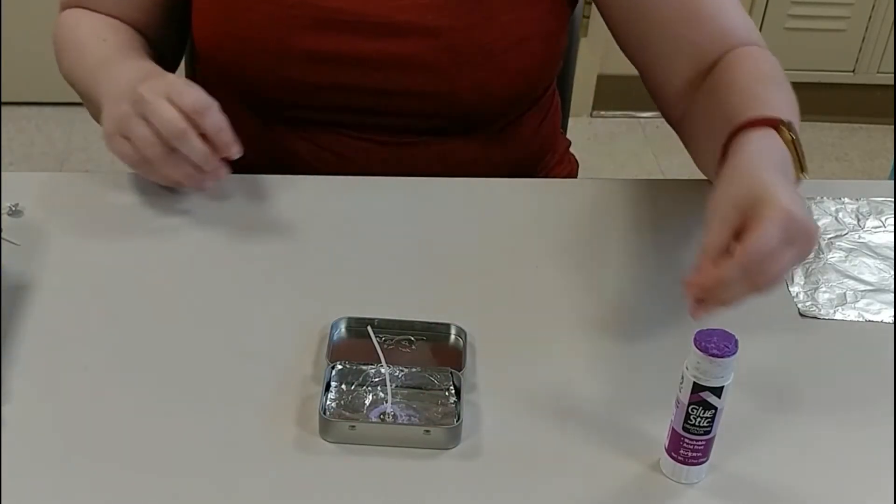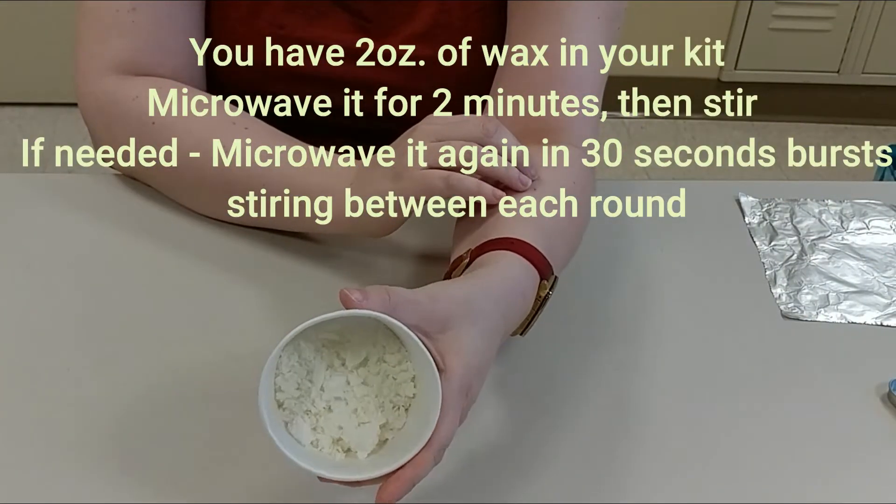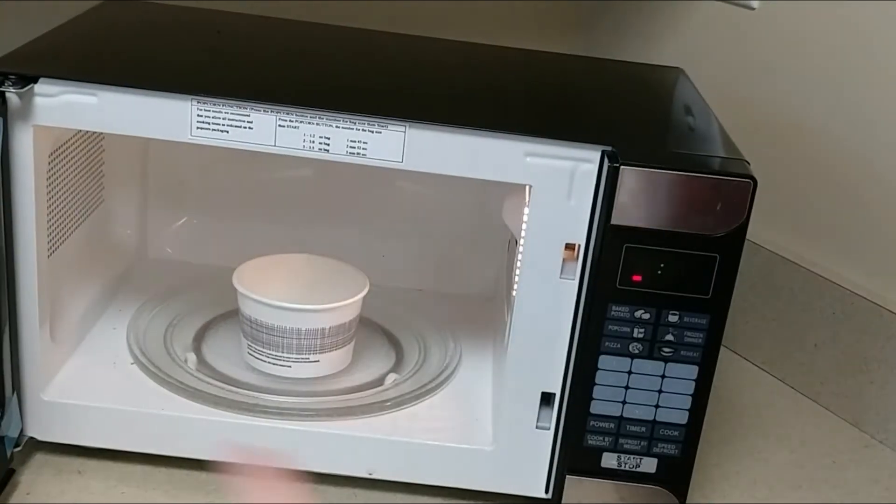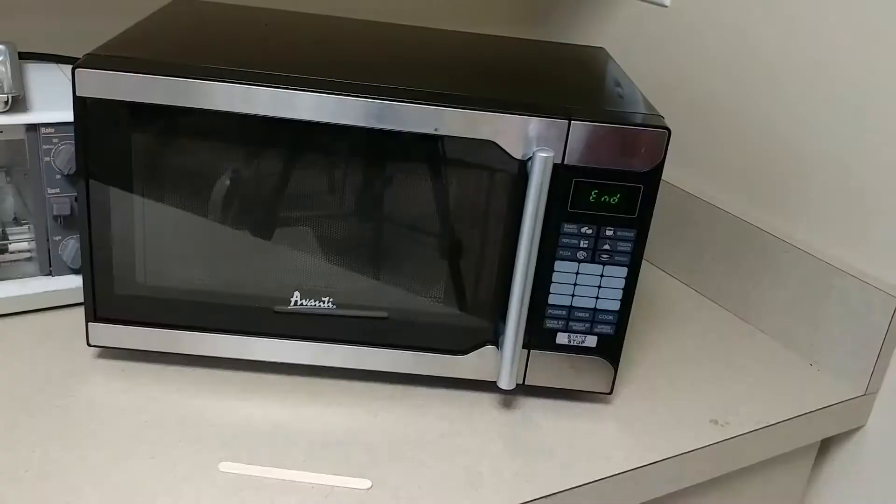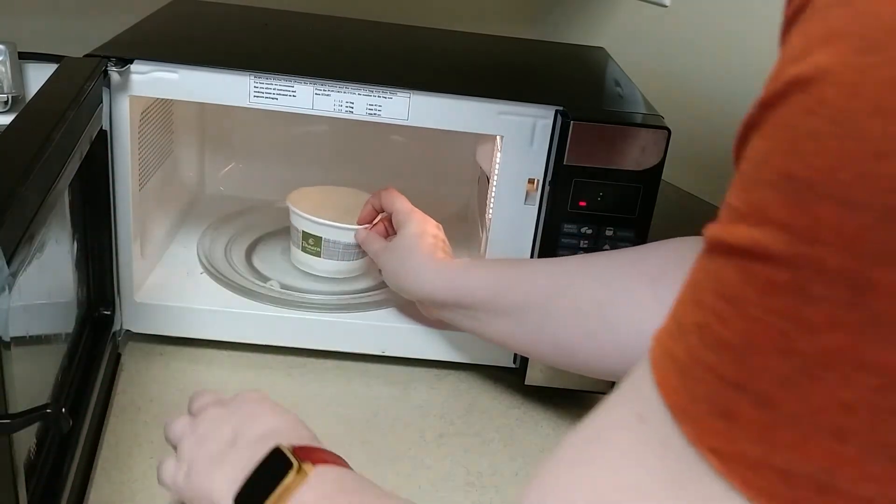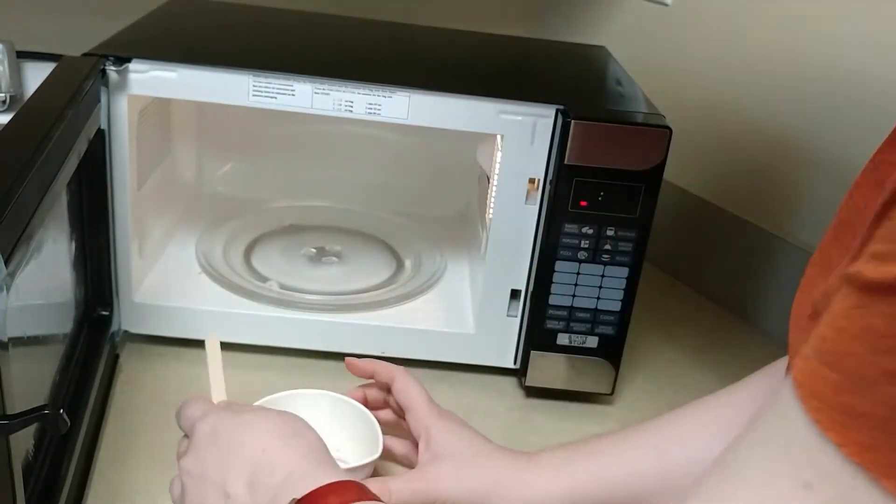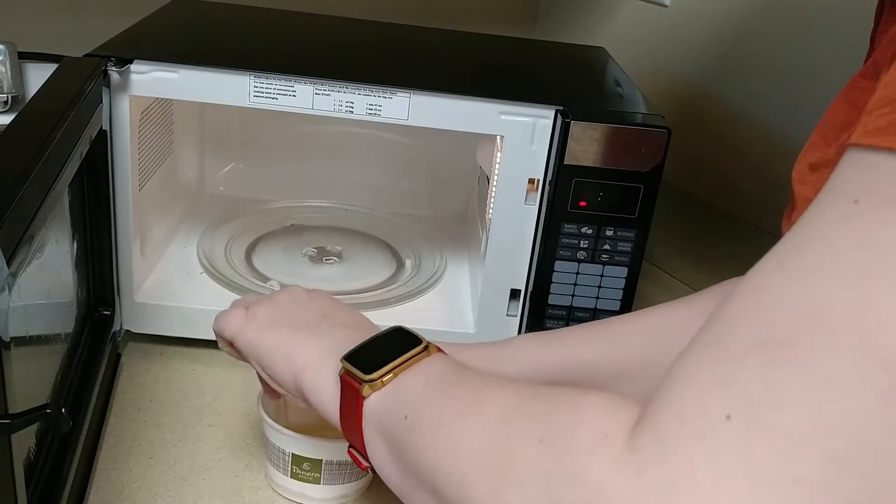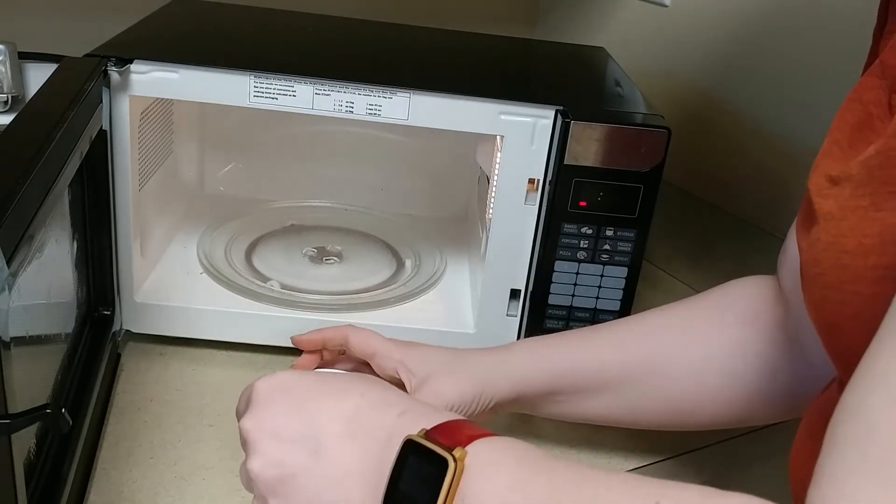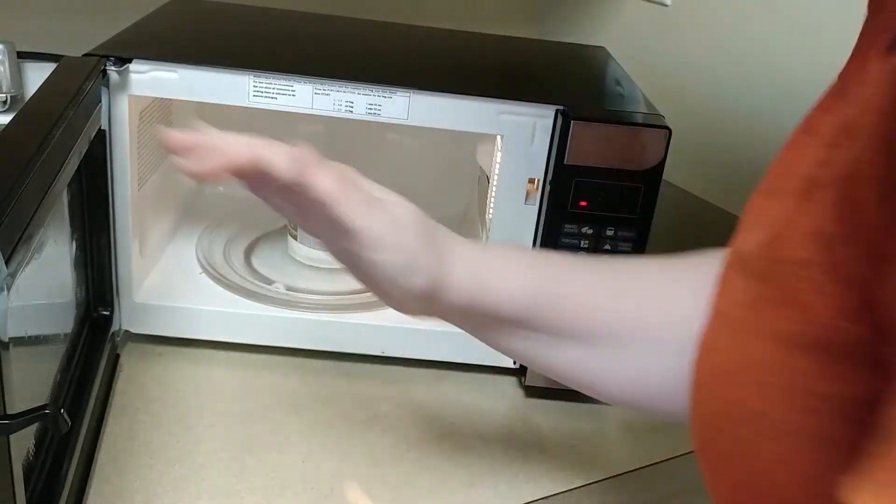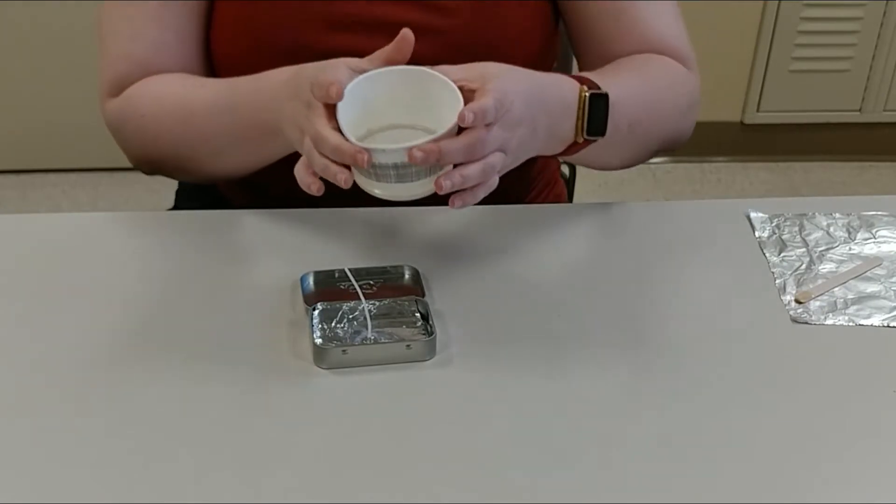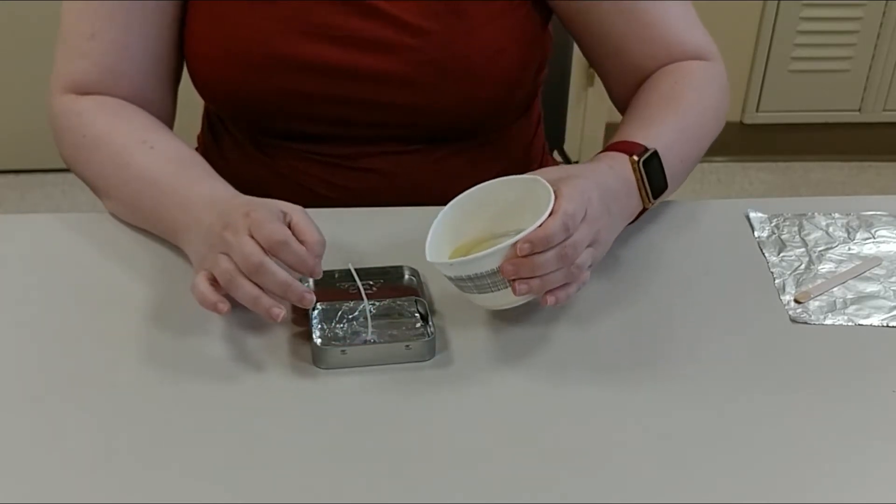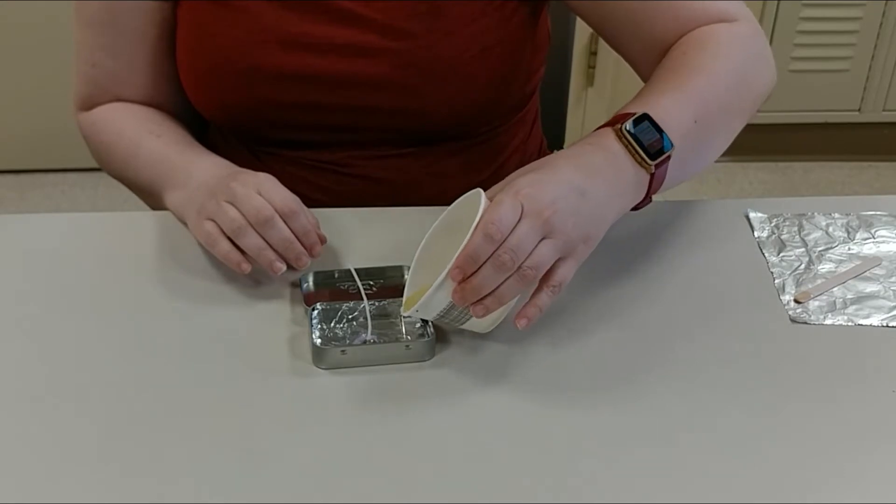I have my one ounce of wax and I'm just going to microwave this for 15 seconds. My wax is melted—it took about a minute and 15 to a minute and 30 seconds. My wick is glued down, and I'm just going to make a little pour spout and fill.